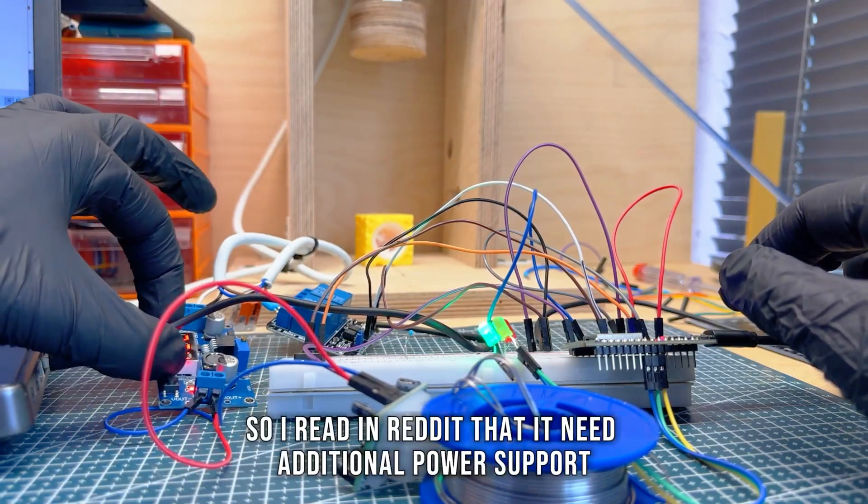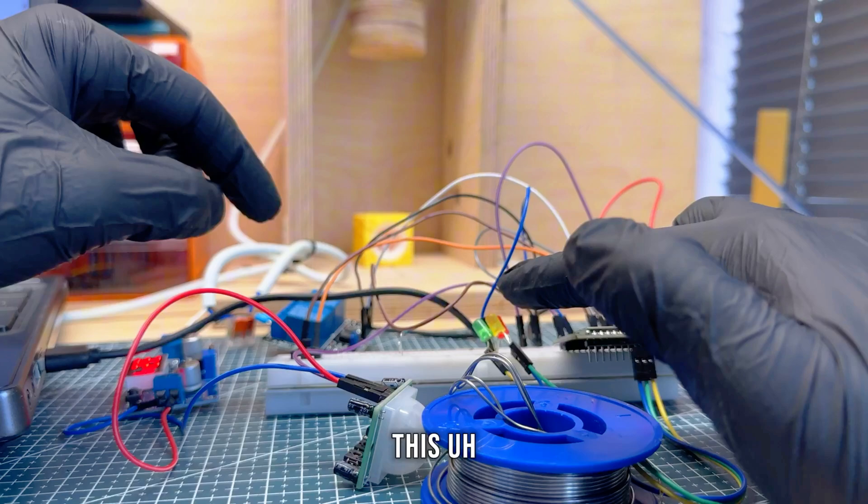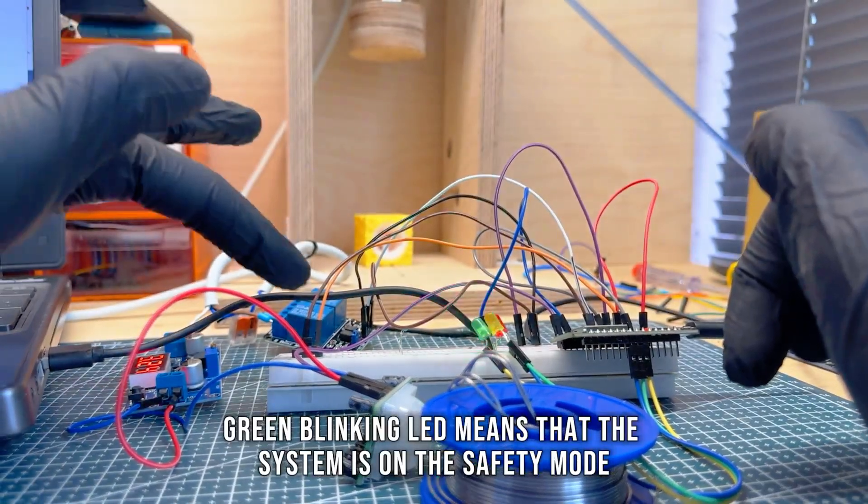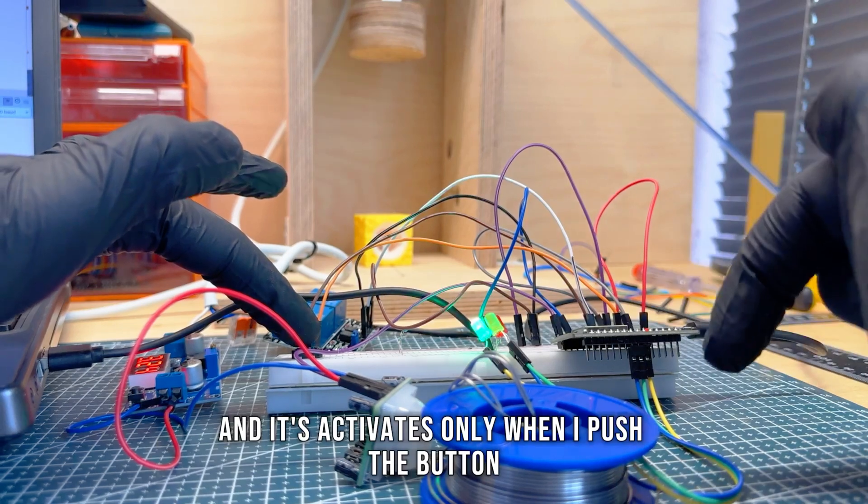I read on Reddit that it needs additional power support. This green blinking LED means that the system is on safety mode, and it activates only when I push the button.